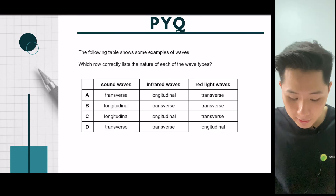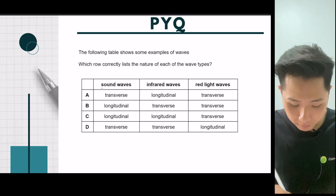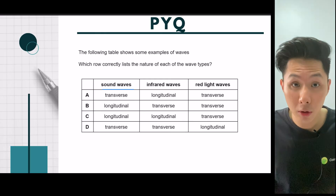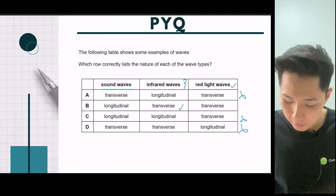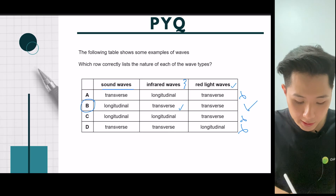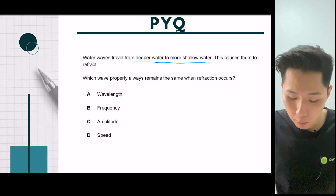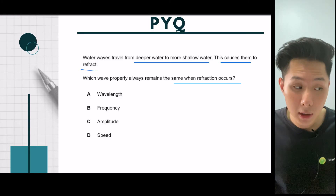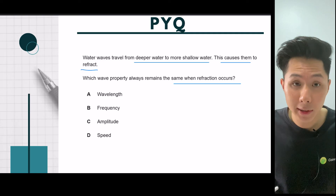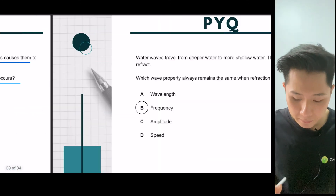Let's look at some practice questions. The first question asks which correctly lists the nature of waves. Sound wave is a longitudinal wave, so options A and D are incorrect. Infrared wave is an electromagnetic wave, which is transverse. Red light wave is also transverse. So the answer is B. The second question asks which wave property remains the same when water waves travel from deeper to shallower water and refract. When waves travel from one place to another, speed might change and wavelength might change — the only thing that doesn't change is frequency. So the answer is B.